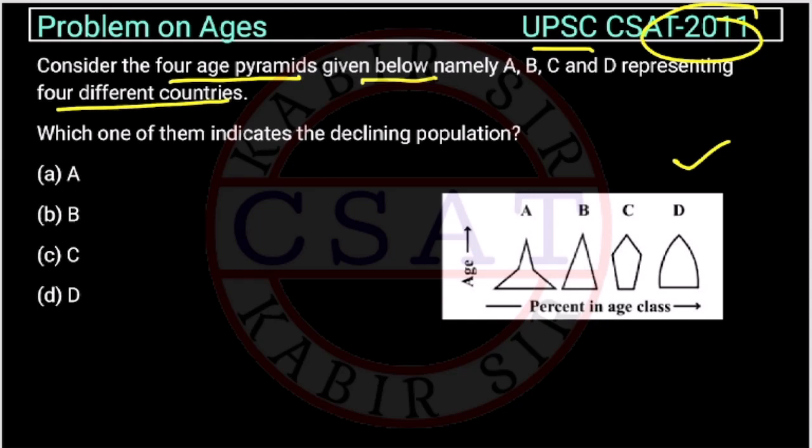So, these are the pyramids of different countries. Which one of them indicates the declining population? So, which one is related to the declining population?